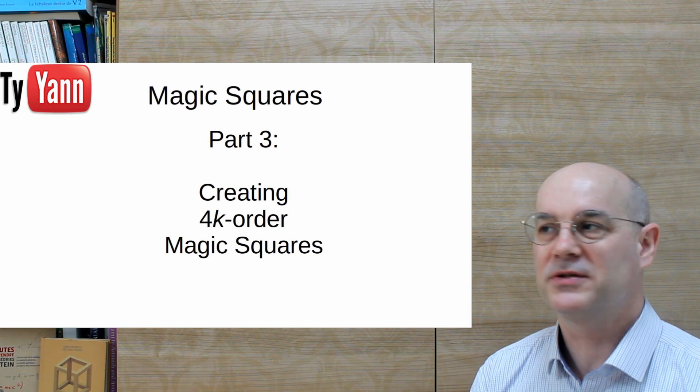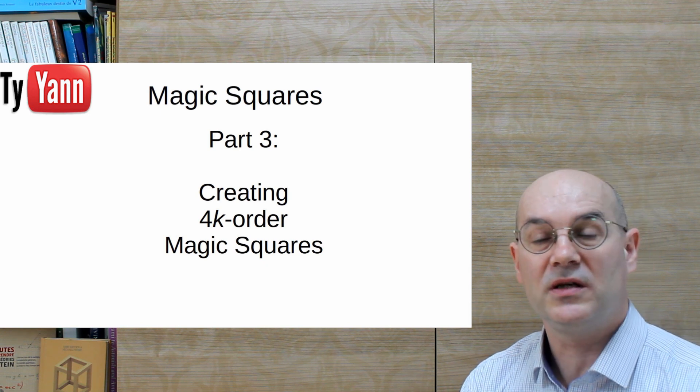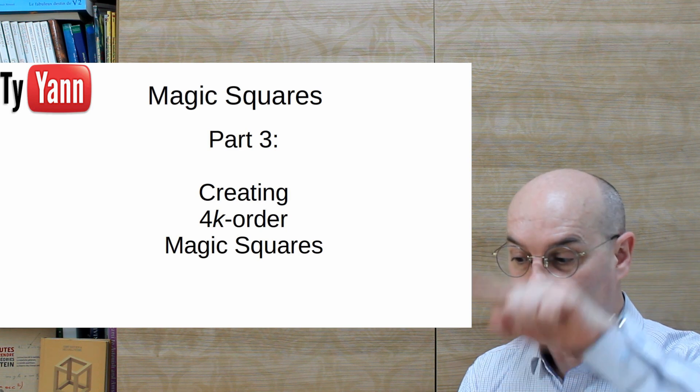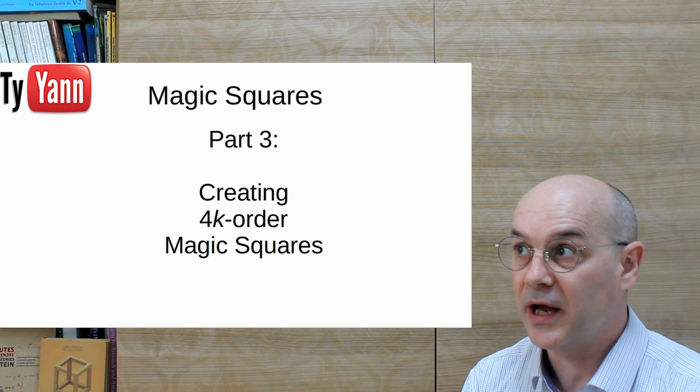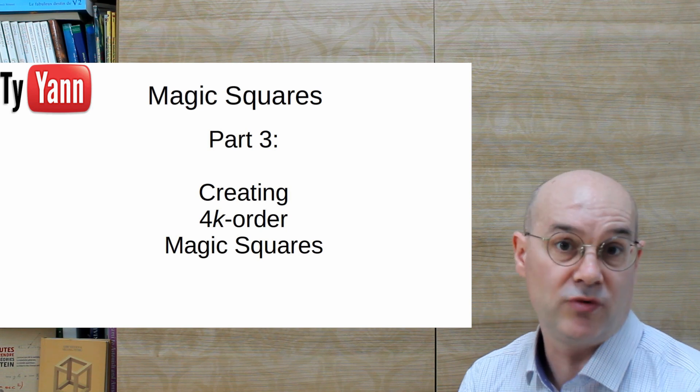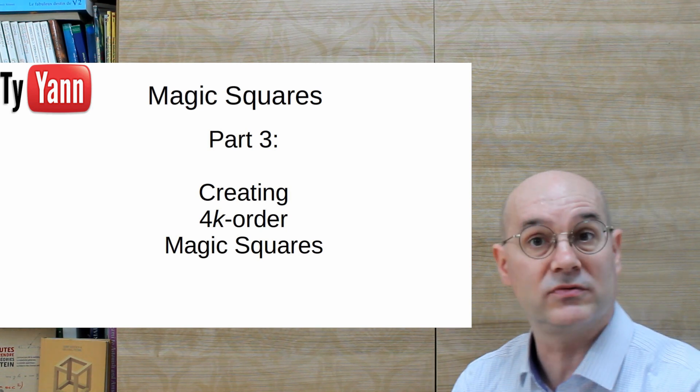First, what does that supposed to mean? Well, it's very easy. If you have a square where the number of rows and the number of columns is a multiple of 4, like 4, 8, 12, 16, et cetera. Well, that's what I mean here.